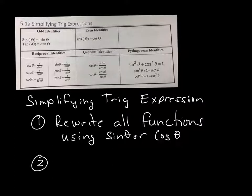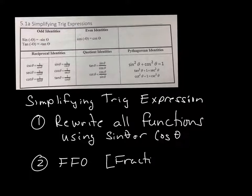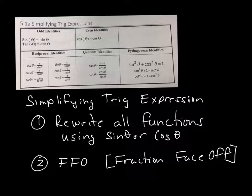The second big idea is FFO — fraction face-off — which means you have to simplify the fractions. There are a couple of different ways to do that: you can either find a common denominator, sometimes you have to break the fraction apart, sometimes you have to rationalize the numerator, and sometimes you have to rationalize the denominator.